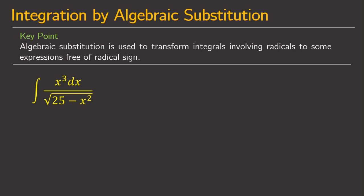We have two problems here. Let's start with the first one: evaluate the integral of x cubed dx over the square root of 25 minus x squared. To integrate this, first we will let u be the radical expression — the square root of 25 minus x squared.